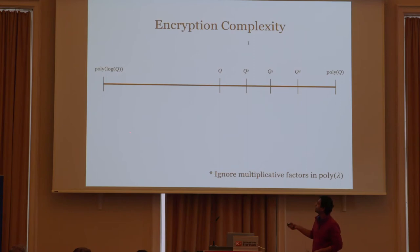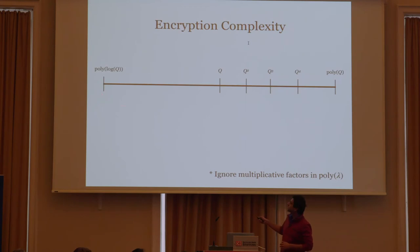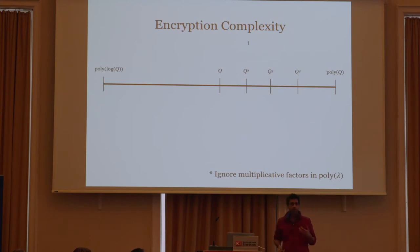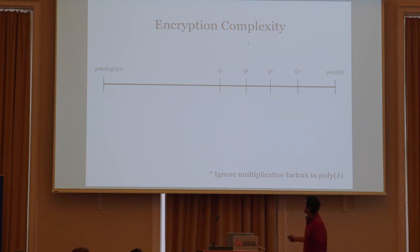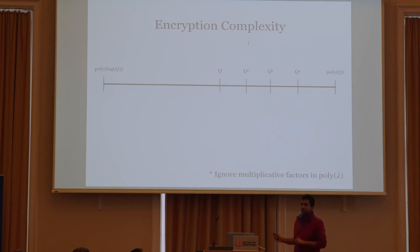I'm going to plot the schemes on a scale. On the left-hand side, you have FE schemes with encryption complexity that grows polylogarithmic in Q. On the right-hand side, you have FE schemes with encryption complexity that grows polynomial in Q. For now, just ignore the multiplicative factors polynomial in the security parameter.